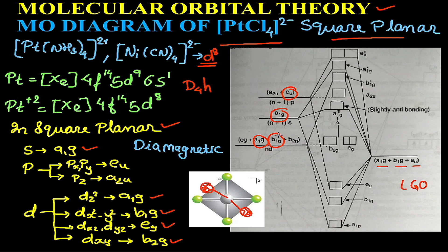Two a1g's of metal, b1g, and eu of the metal will combine with the ligand group orbitals, and as a result we will get bonding and antibonding molecular orbitals. The remaining orbitals—a2u, eg, and b2g—will remain in the non-bonding state.